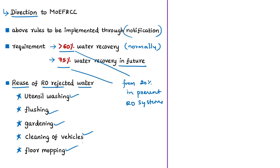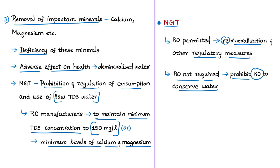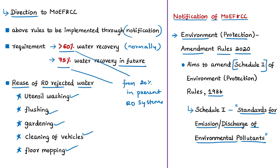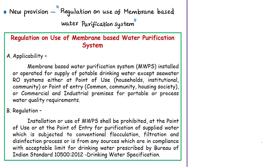Based on the NGT order, the Ministry of Environment has issued a draft notification — described as 'draft' because provisions may change after receiving public comments before final gazette publication. The notification is titled the Environment Protection Amendment Rules 2020, aiming to amend Schedule 1 of the Environment Protection Rules 1986, which prescribes standards for emission and discharge of environmental pollutants. The amendment inserts a provision for regulation on use of membrane-based water purification systems.